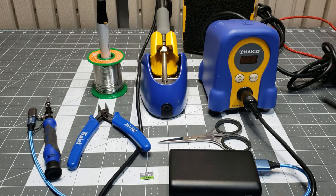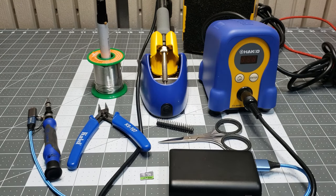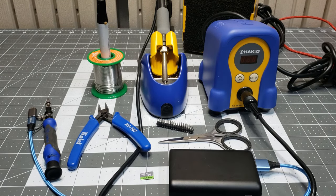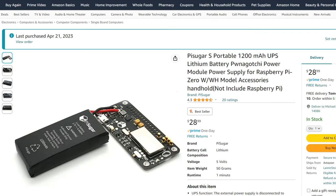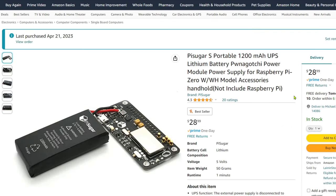If you have all the necessary tools, have some headers and a microSD card laying around, and use a battery bank for power, it can cost as little as $45 to build. Using a dedicated 1200 mAh battery will run you an extra $30.